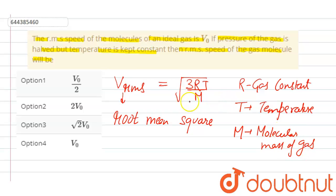Now this formula is clearly indicating that the RMS speed depends on temperature but not depends on pressure.